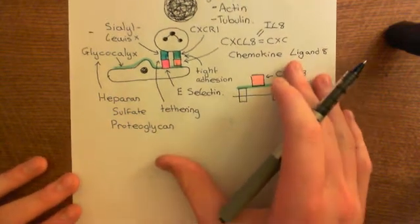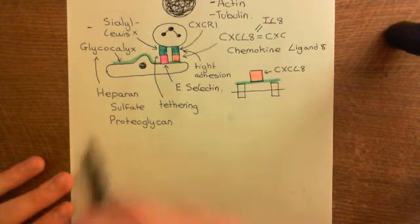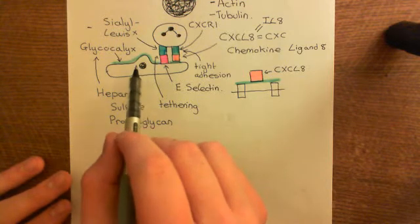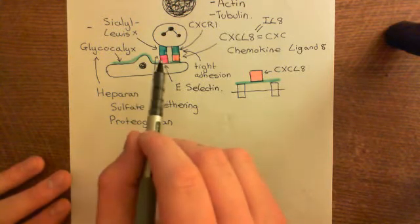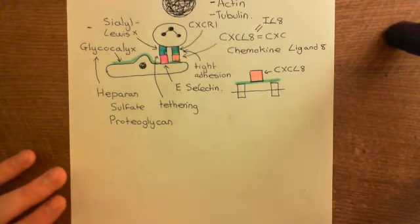Now, that happens initially in type 2 activated endothelial cells. But later on, what's going to happen is these endothelial cells, which have undergone type 2 activation, are going to change their gene expression.